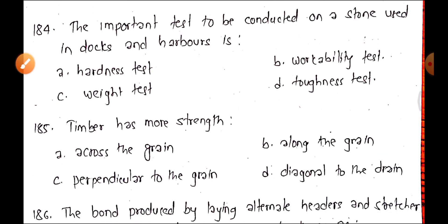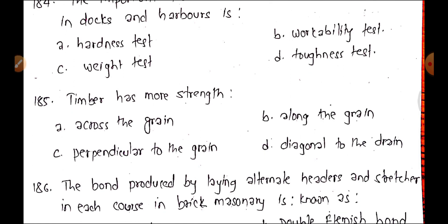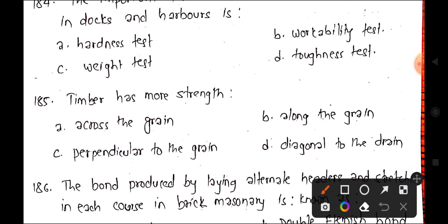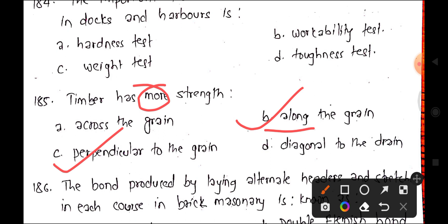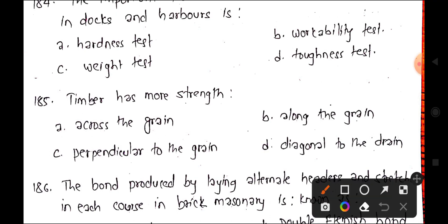Question 185: Timber has more strength — options are A: across the grain, B: along the grain, C: perpendicular to grain, or D: diagonal to grain. Timber has maximum strength along the grain, parallel to grain. Perpendicular to grain gives minimum strength. Option B is correct.